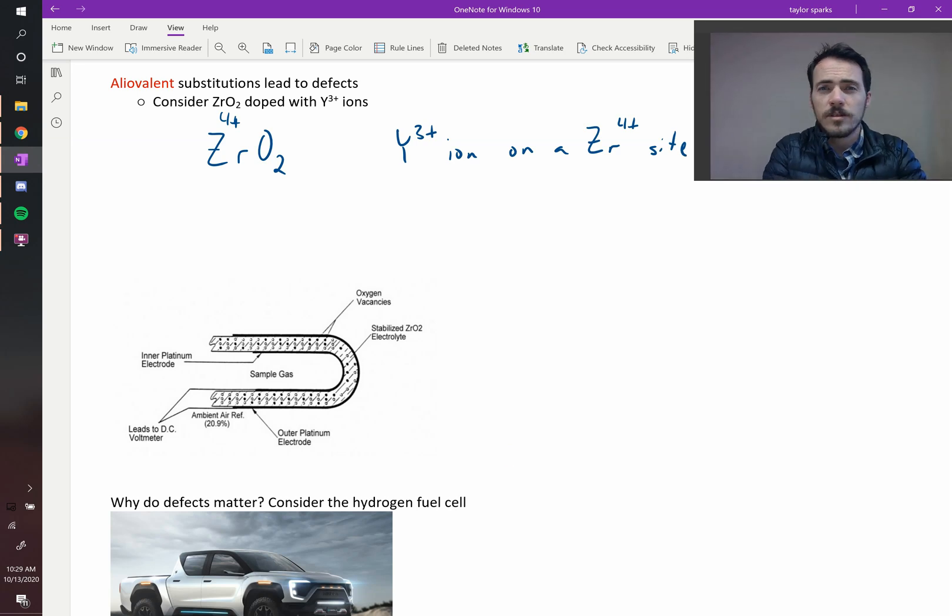So, what will this cause the crystal to be? Well, we know that electroneutrality has to be maintained, and yet by putting a 3 plus on a 4 plus site, now it's overly negative. So we have to fix this by one of two ways.